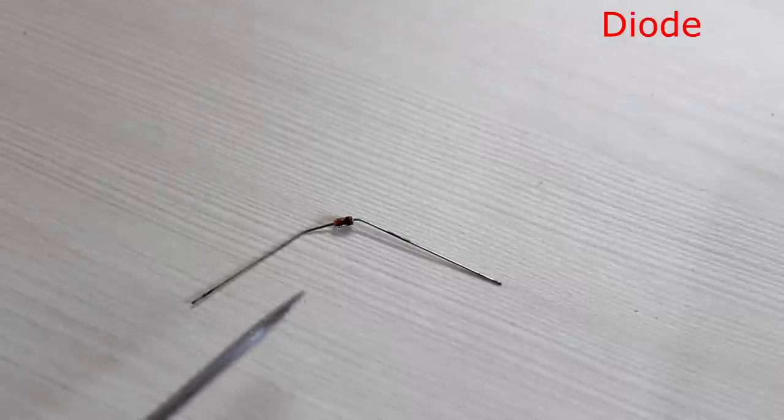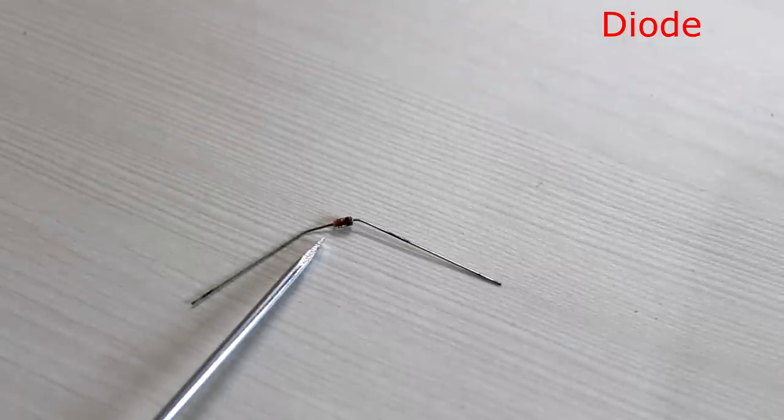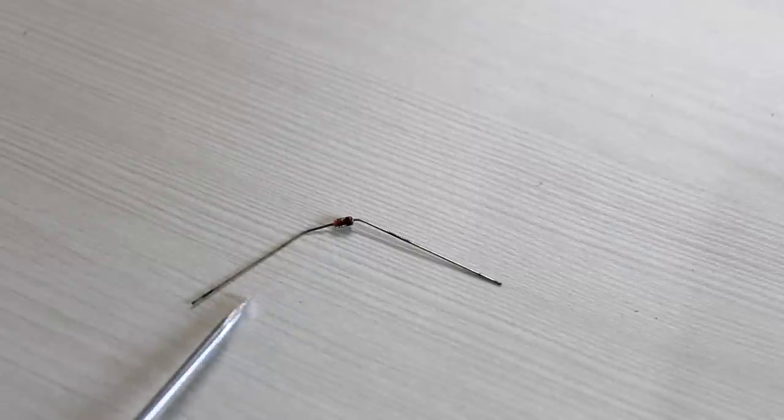This is a 1N4148 diode. The dark line corresponds to the cathode, which must be connected to the negative and the other is anode, which is the positive. The current flows in this direction.